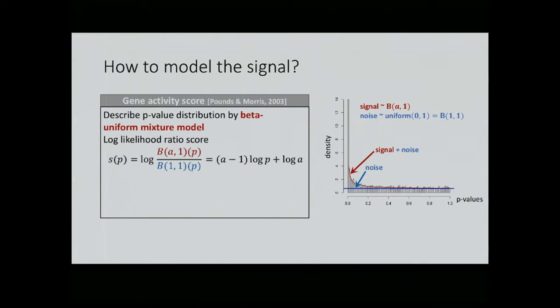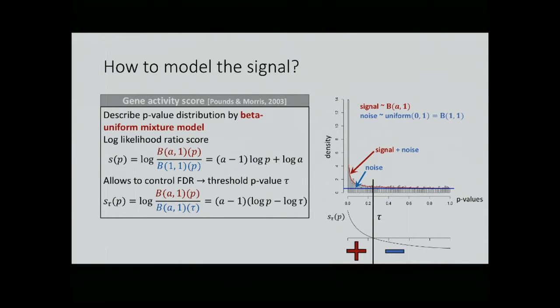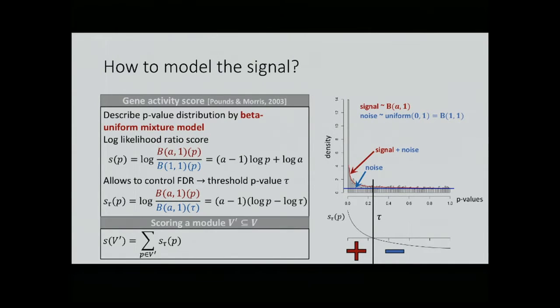Here's the distribution from some real data set. You can model this as a mixture of a signal and a noise component. You can say that the signal follows a beta distribution, the noise is uniformly distributed, and you can fit the parameters to this beta uniform mixture model. You can derive a nice log-likelihood ratio score for the activity of one node, which is just the logarithm of the signal over the noise. What's even nicer in this model from Pounds and Morris, you can work in the FDR. Given the false discovery rate, this translates into a threshold p-value tau such that genes with lower p-value will have a positive score. At tau you get a score of zero, and noise genes will get a negative score.